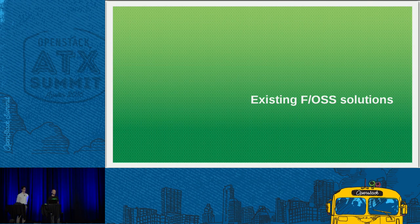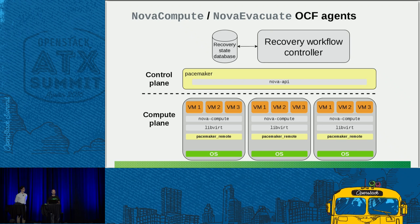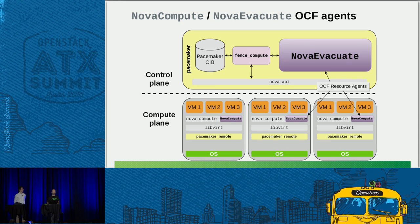Now we'll talk about some existing solutions in the free open source space. The first one is based on a thing in Pacemaker called OCF resource agents. A resource agent is essentially a plug-in to Pacemaker that lets you manage resources of any type. We have two resource agents: one called nova-compute which runs on the compute nodes and looks after the nova-compute service, and another one running on the control plane called nova-evacuate which is in charge of the VM recovery workflow and uses its own database inside Pacemaker. The CIB — the Cluster Information Base — is on the left.